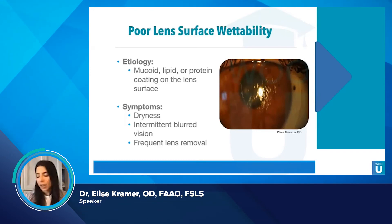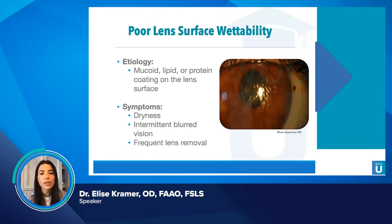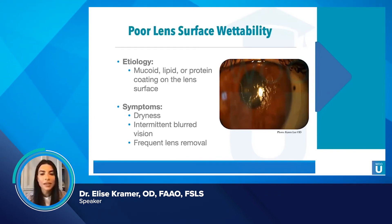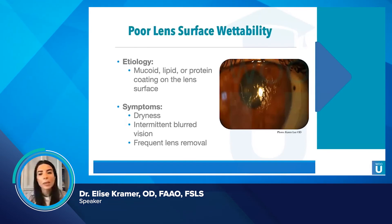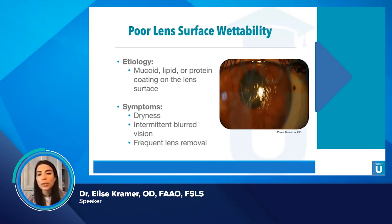The etiology of poor wettability is mucoid, lipid, and protein coating on the lens surface — you can see how oily that looks. It just doesn't look consistent. Regardless of how centered, stable, and nicely fitting the scleral lens is, you can see that this patient is not going to be happy.